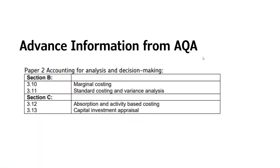Advanced information from AQA — just to remind you — for paper 2 section B we can expect marginal costing and standard costing and variance analysis, and I've already recorded some videos and I'll be doing some more on those topics very soon. I'm concentrating now on section C, where they've told us the questions will involve absorption and activity-based costing and capital investment appraisal.